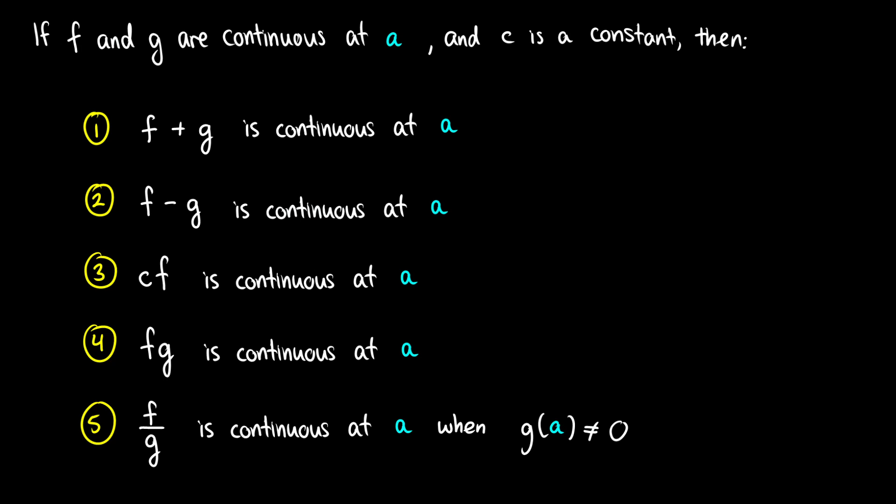Much like limit laws, we have laws for continuity as well. We're going to assume the functions we're looking at are already continuous and then talk about the continuity of a new function based on that fact. Here are the five laws. If we have two functions f and g that are both continuous at a specific point a, then the following laws hold. First, f plus g is continuous at a.